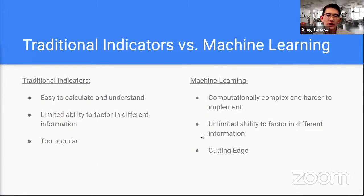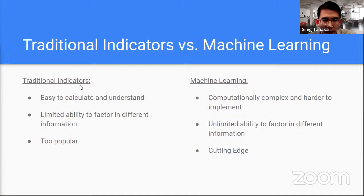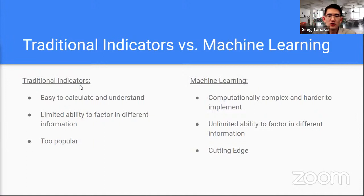So what's the difference between traditional indicators versus machine learning? The nice thing about traditional indicators — this is why they were developed 50 years ago — is that you really don't need a powerful computer to calculate them. A lot of them are simple ratios or just summing up a few numbers or taking an average. But the really big problem with traditional indicators is that they have very limited ability to factor in different information, with just a few parameters. And frankly, the biggest issue is that it's just way too popular — everyone knows the 50 to 100 traditional indicators and has bots triggered off them.